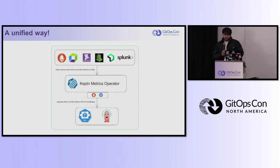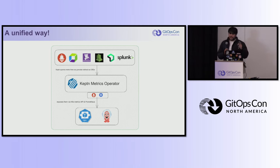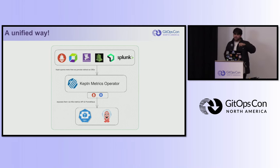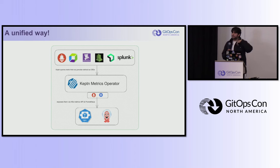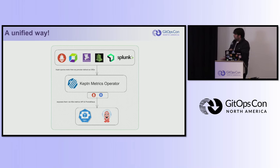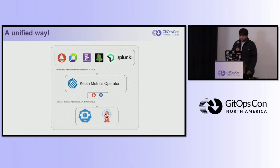The Keptn Metrics Operator manages all the integrations for you. As we saw, you define the Keptn metric and the Keptn metrics provider. This operator has two parts: the controller and the adapter. The controller fetches the metrics for you, and the adapter exposes them. These exposed metrics can then be used by other tools such as HPA or the Argo Rollout server.